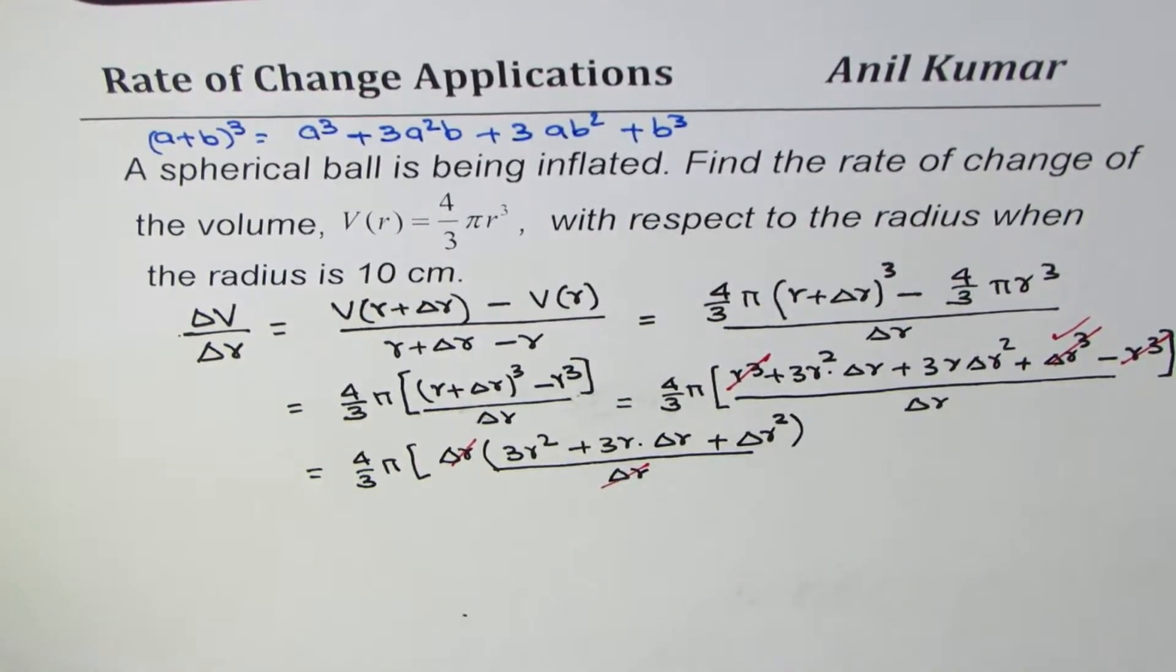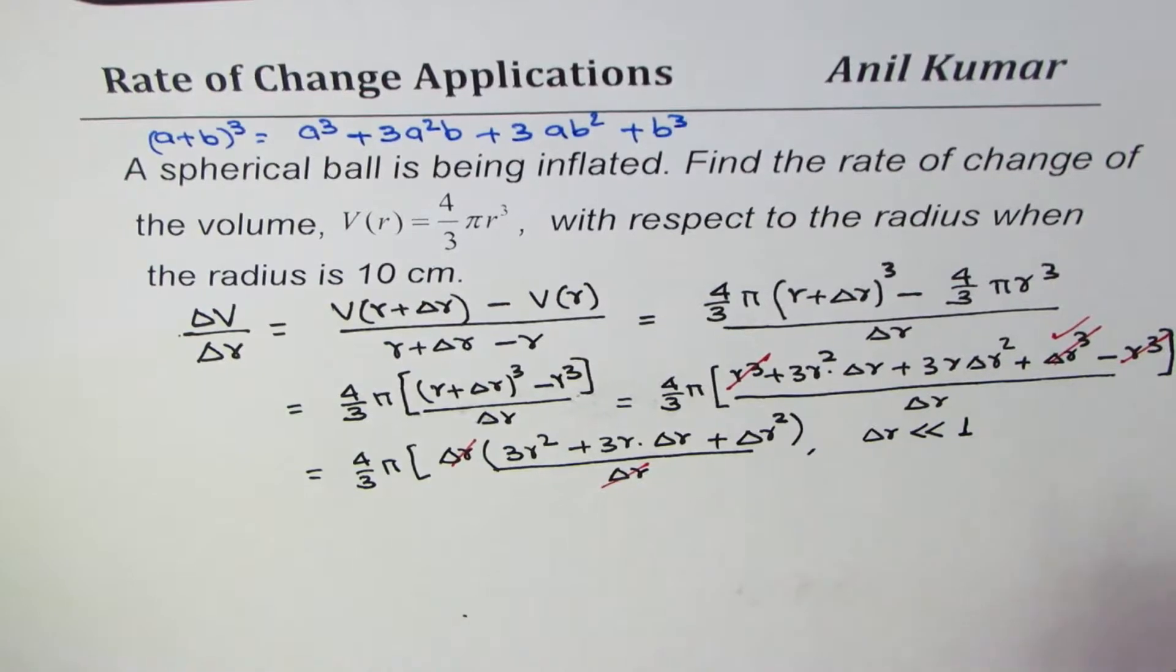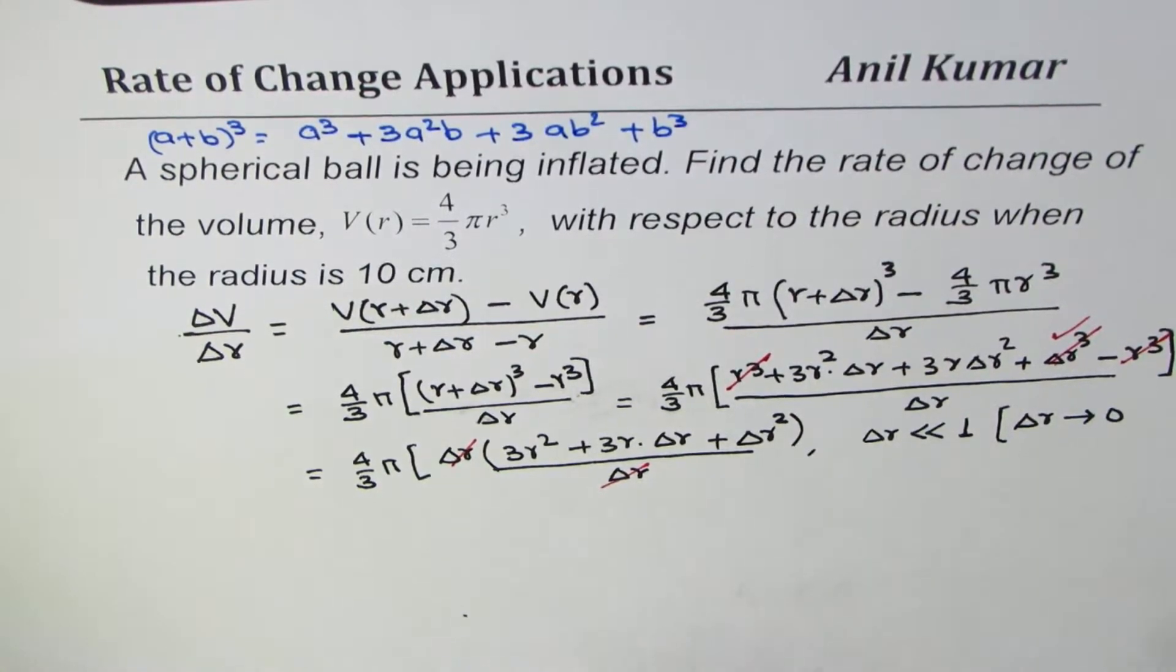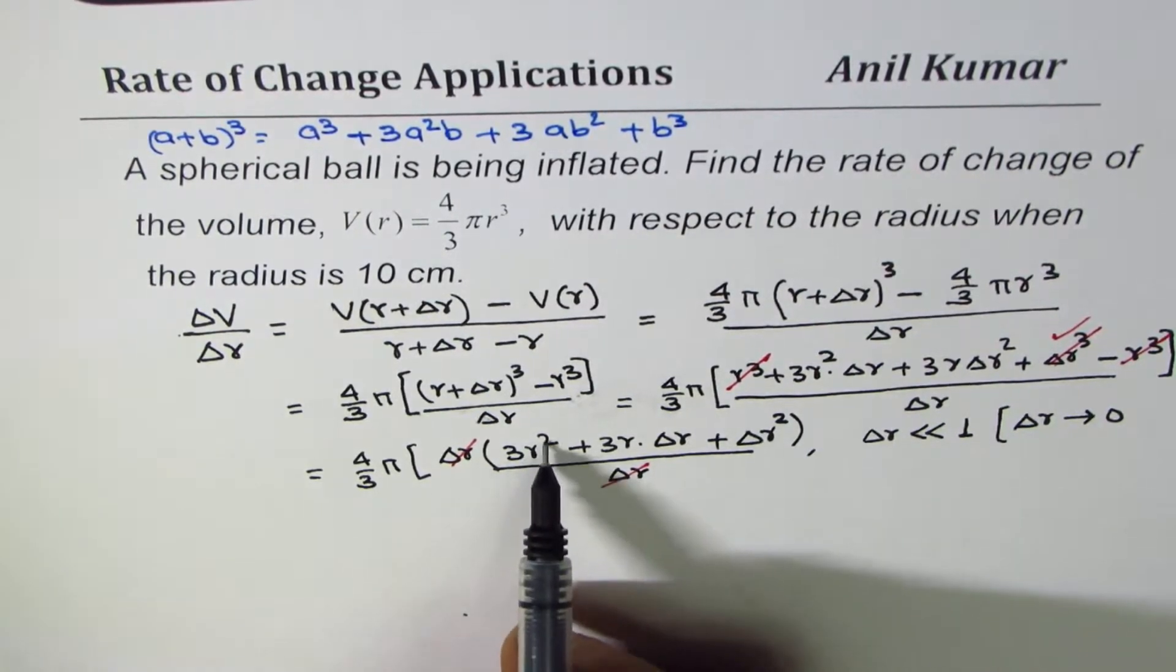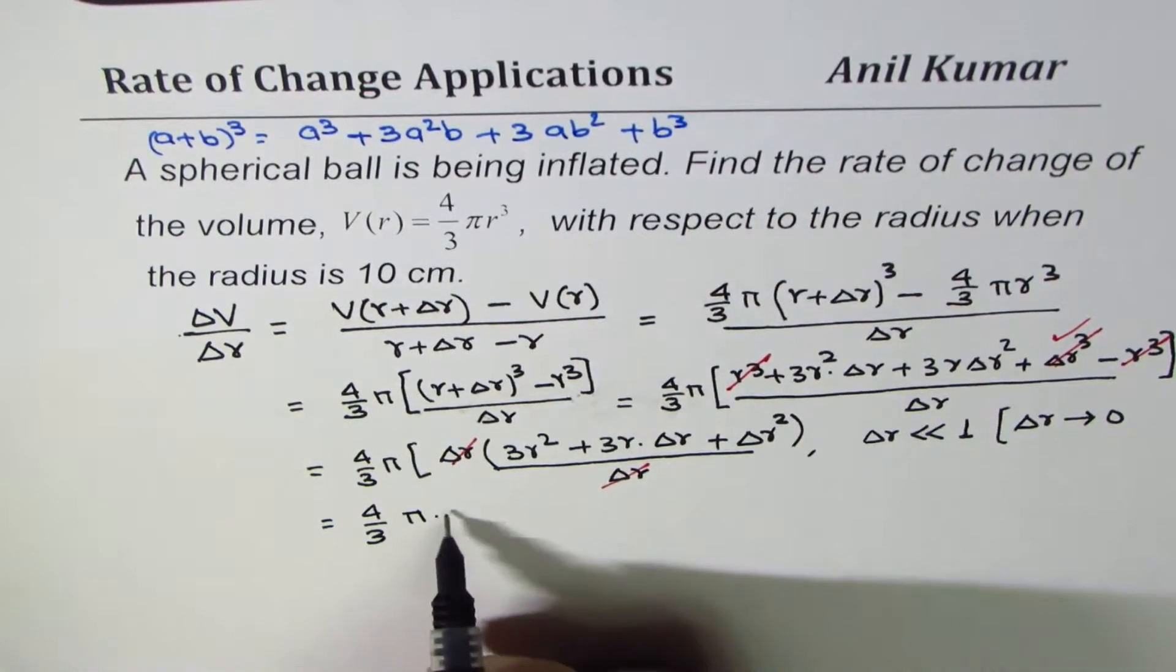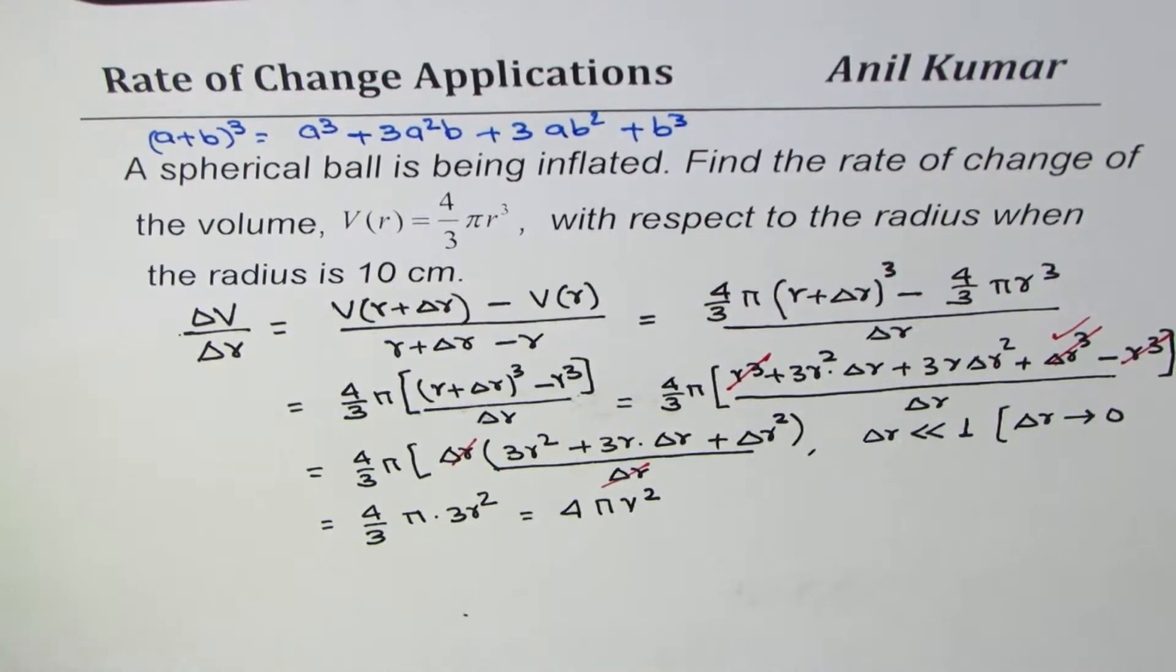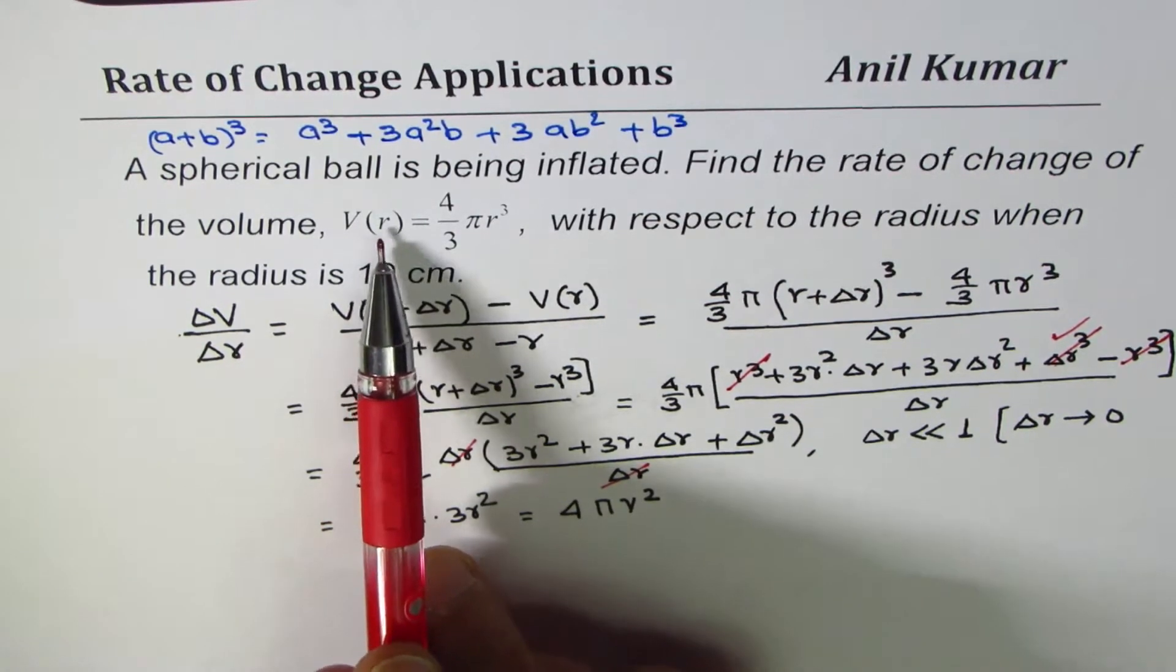And we have an expression where we know that ΔR is very very small. At times you may also write that ΔR actually approaches zero. So we can ignore these terms. If you ignore these terms, we are left with 3R², so we could write this as 4/3 π times 3R². 3 and 3 cancel, so we get 4πR².